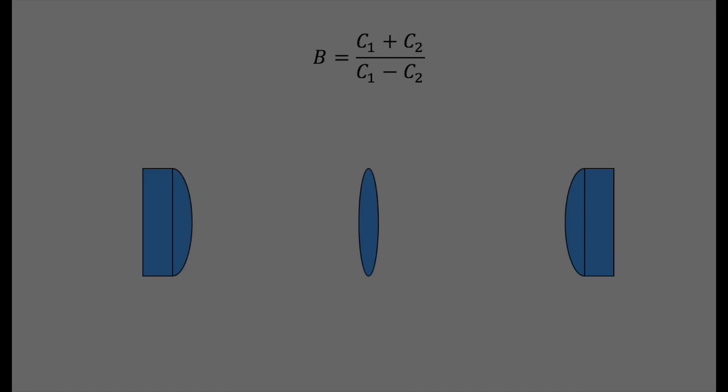Shape factor is a function of the surface curvatures. A negative shape factor corresponds to a plano-convex lens and a positive shape factor corresponds to a convex-plano lens.